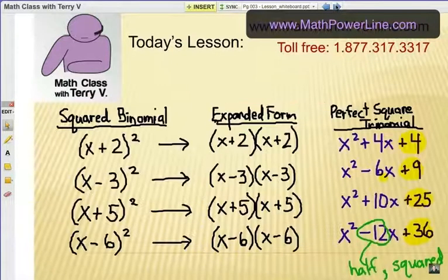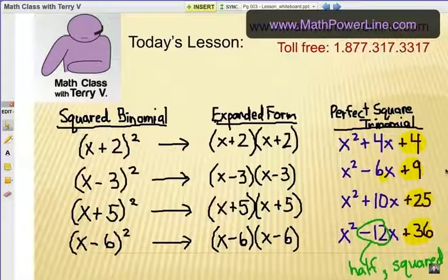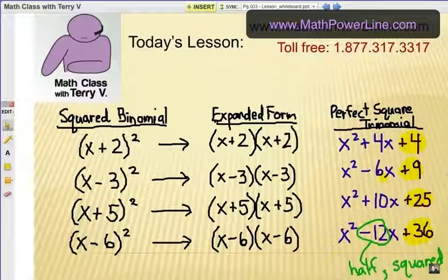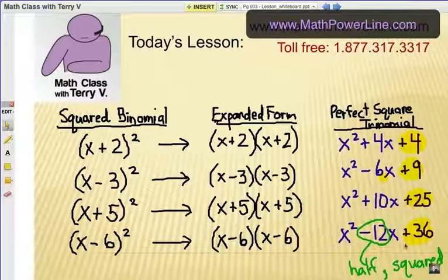So the basics of completing the square, as I've mentioned in a previous video, is this: you have to find the third term in a perfect square trinomial. And the rule to remember is pretty simple if you practice a little bit - find half of the middle term, and then you square that amount, and that will give you your third term, which is the important part.